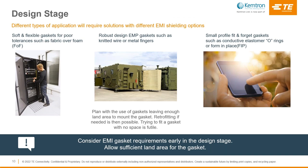EMI gasket mounting should be considered early on in the design stage. Trying to retrofit a gasket on a flange that wasn't designed to take one will narrow your gasket options or be unattainable, and some redesigning may be required. As a general rule, the more land area available to fit the gasket, the greater the options. Different types of applications require different types of EMI gasket — for example, a typical cabinet enclosure will require a soft and flexible gasket such as a conductive fabric-over-foam gasket, a military shelter will require gaskets such as knitted wire or metal fingers, and small devices may need conductive elastomer O-rings or form-in-place gaskets.